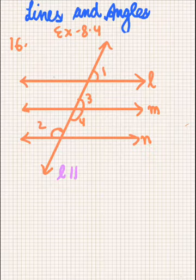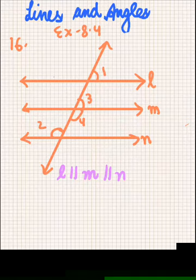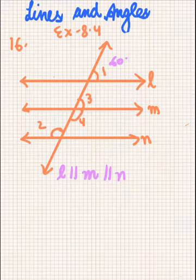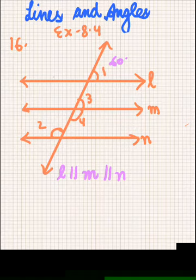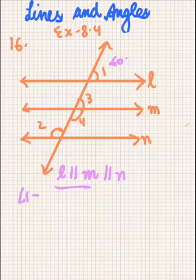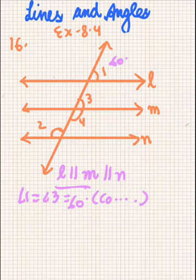Welcome everyone. We are on R.D. Sharma class 9, Lines and Angles chapter, exercise 8.4, question number 16. In this question we are given that L is parallel to M is parallel to N, and angle 1 is 60 degrees. We have to find angle 2. Since L is parallel to M, angle 1 will be equal to angle 3, which equals 60 degrees, because these are corresponding angles.